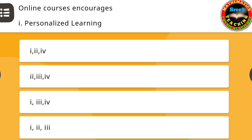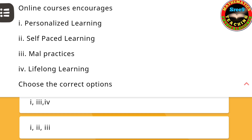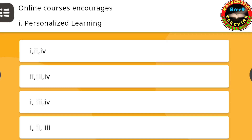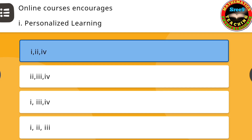The next question: Online courses encourage — first, personalized learning; second, self-paced learning; third, malpractices; fourth, lifelong learning. Choose the correct options. The correct answer is one, two, four — the first option.